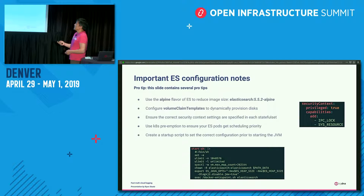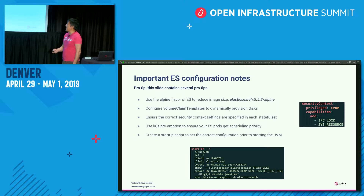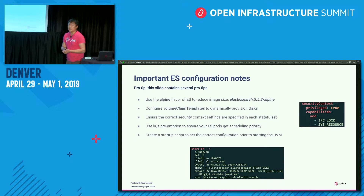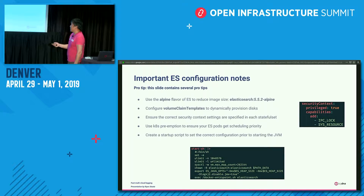We use the Alpine flavor of Elasticsearch to reduce image size — there's a five-megabyte Linux image behind that, so it's still pretty lightweight. We have a number of volume claim template configurations, referring to persistent volumes and sticky volumes that can get applied to containers after they're resurrected. And then you want security contexts and network contexts in place.